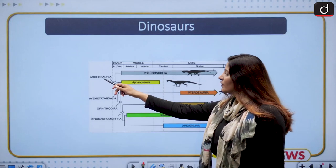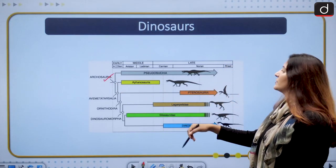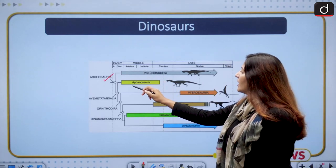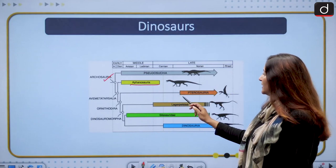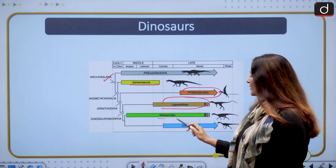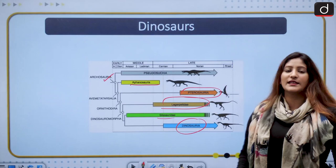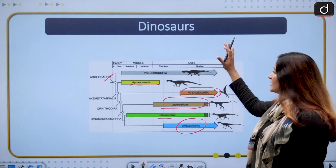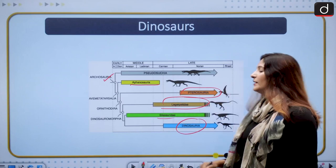Archosauria was divided into many things: Aphanosauria, Pterosauria, larger Crocodylidae and Ornithosuchia, as well as Dinosauria. You can see by the shapes they're very different.